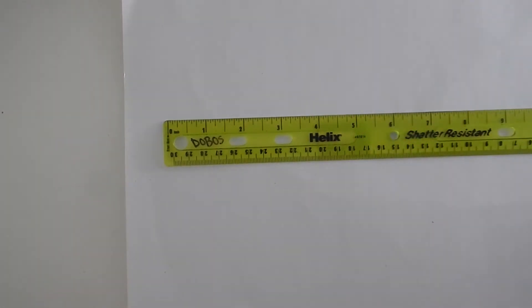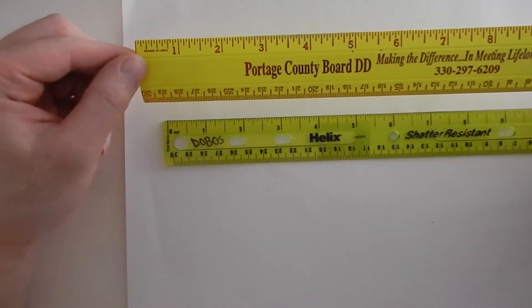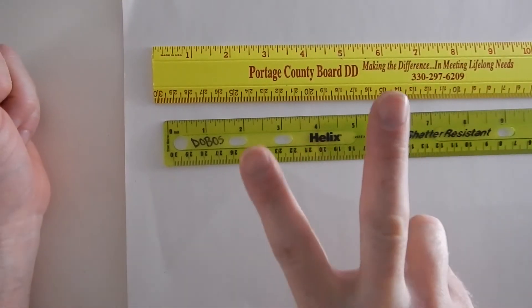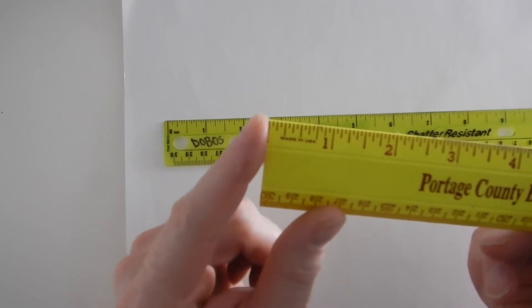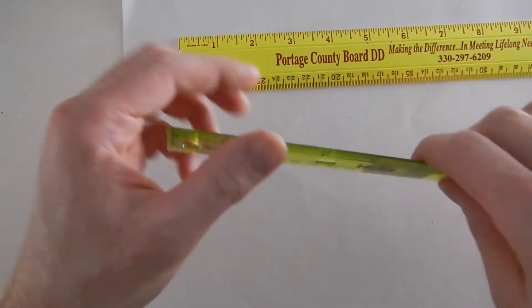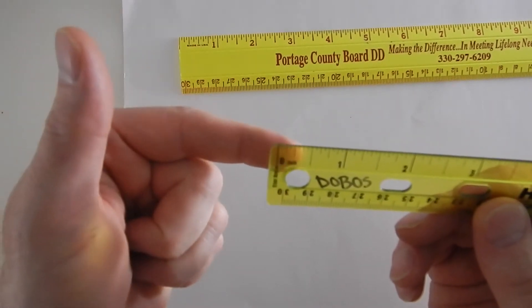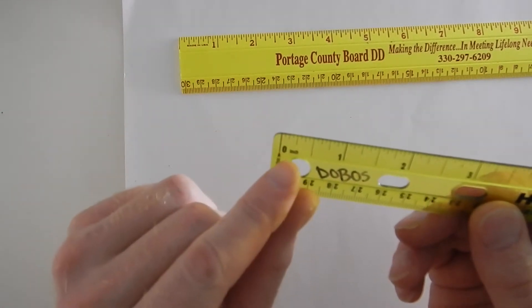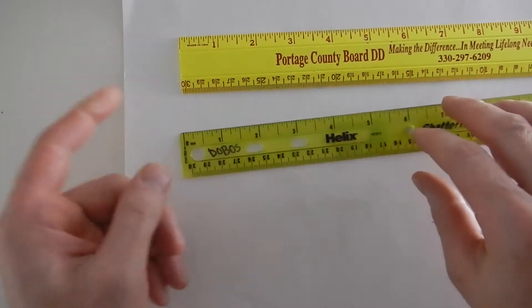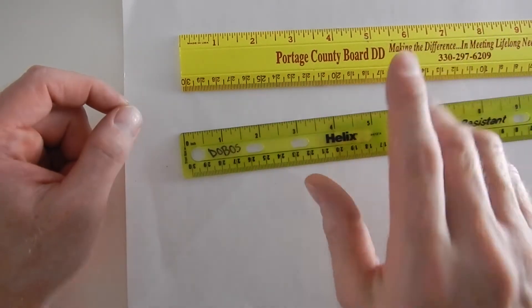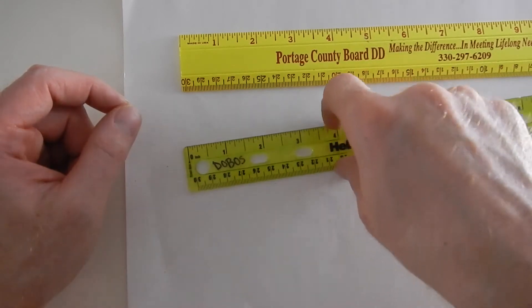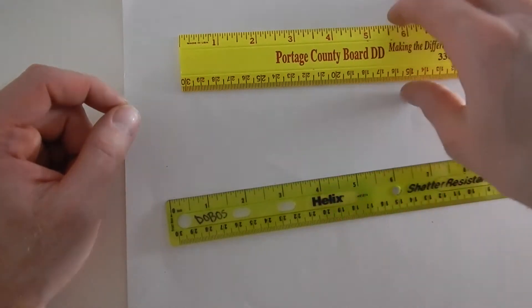So first thing we're going to need is a ruler. If you don't have access to a ruler for this project, then make sure that you comment and let me know. There are two types of rulers you're going to come across. One where the zero is right on the edge of the ruler, and the other type where the zero is indented, meaning it doesn't start on the edge. You need to make sure that you check your rulers to see which type you have, because it will make a difference.